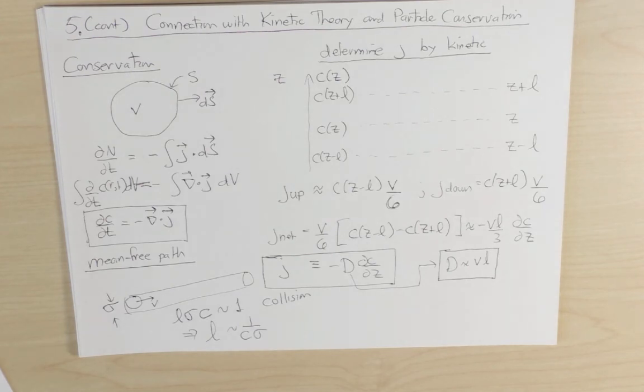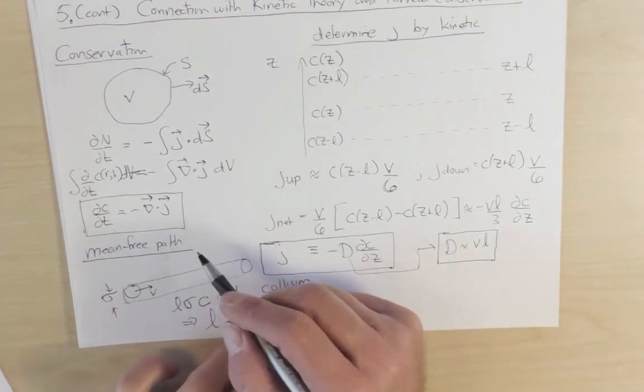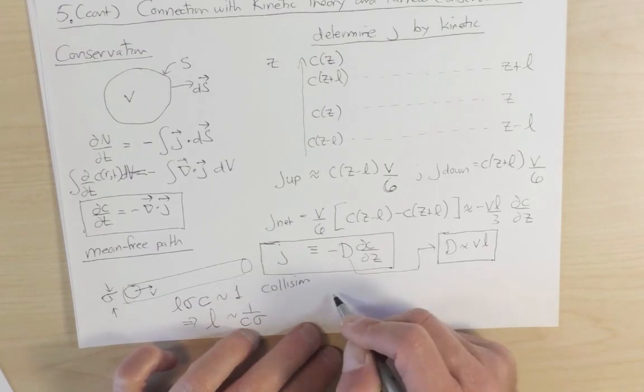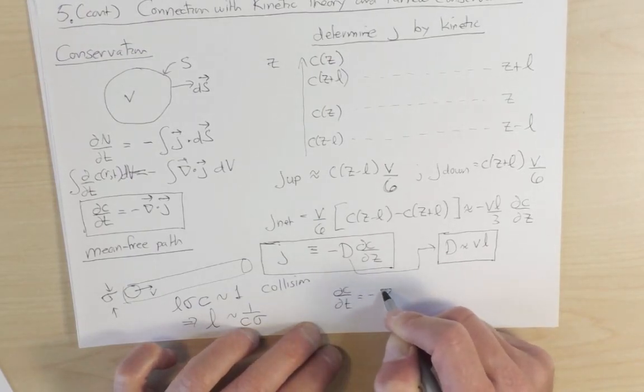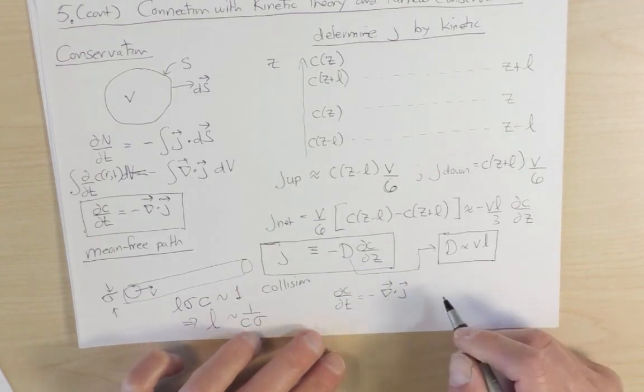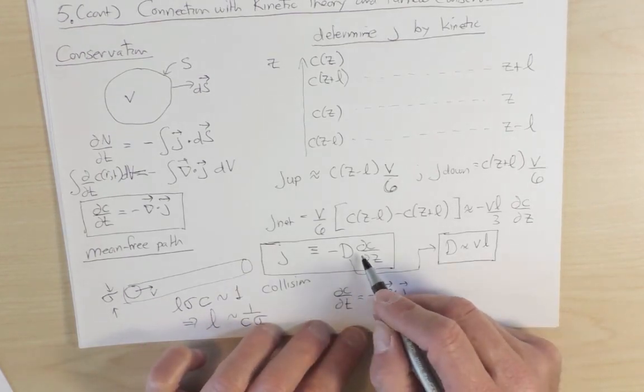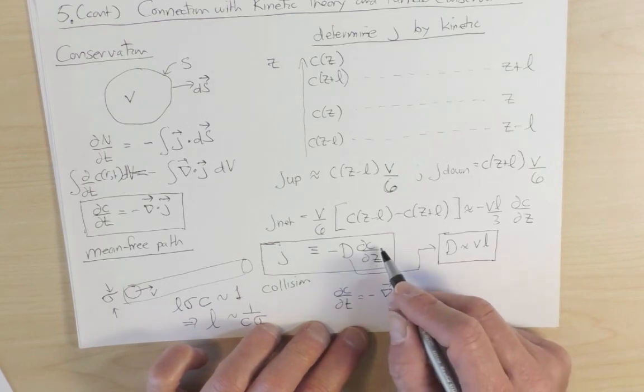The final step is now we can use this information to again obtain the diffusion equation. Because starting from our continuity equation, we have dc by dt is equal to minus divergence of the current. But the divergence of the current is the gradient of the concentration.